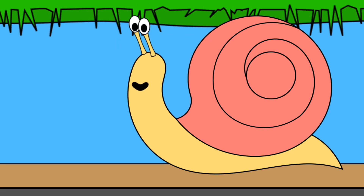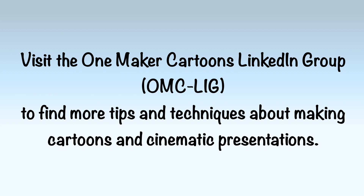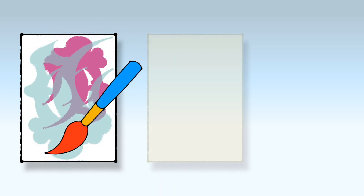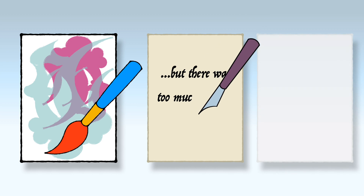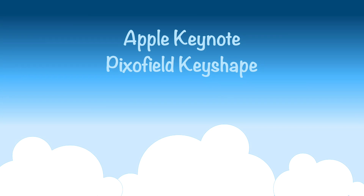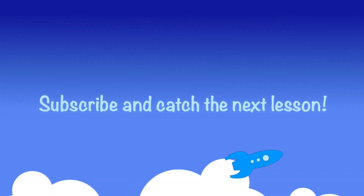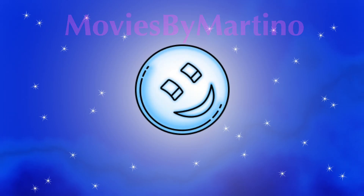There are tons more implied frame movements you can create, and they all make your cartoon more cinematic. For more tips and techniques about making cartoons and cinematic presentations, visit the One Maker Cartoons LinkedIn group. Hope you enjoyed this Making Moments lesson. Our lessons are about making your own art — like painting a picture, writing a poem, or composing a song — you can imagine and create cartoons all on your own. All cartoons on the Movies by Martino channel are made with Apple Keynote and Pixel Field Key Shape. For more tips, read the description. Subscribe and catch the next cartoon lesson. Movies by Martino. Small Movies.